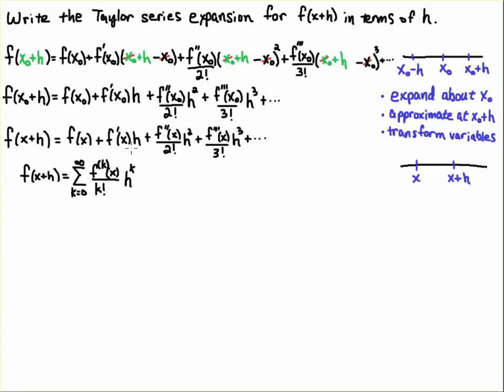We could further write this in summation series. This is summation notation and series notation by putting the big sigma in here, and so we'll have k goes from zero to infinity of the derivative of f at x times h to the k, because h is what's increasing in powers here.